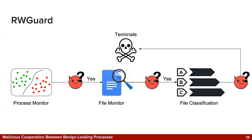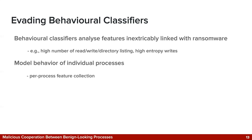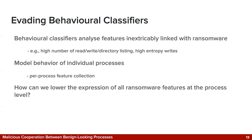Our goal is to evaluate the robustness of this class of approaches. One challenge is that the behavioral classifiers I described look at features that by design are inextricably linked with ransomware activity — a ransomware attack needs to express those features in order to function: high number of reads, writes, and directory listings, high entropy, and so on. One possible insight is that all those approaches are based on individual process behavioral models — they collect features and perform detection at the granularity of individual processes. So the question is: how can we lower the expression of ransomware features at the process level?